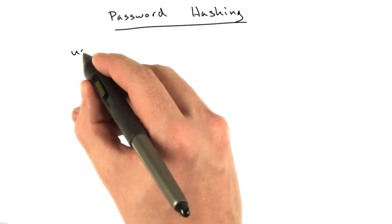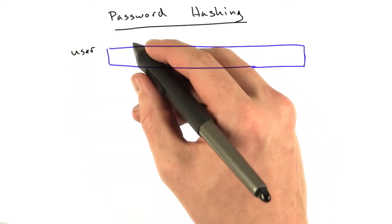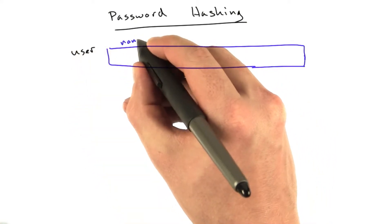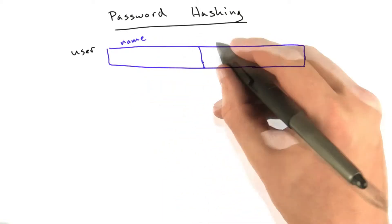Say we have a table for users in our database, and this table has a couple columns. One column is for the user's name, and another column is for the user's password.